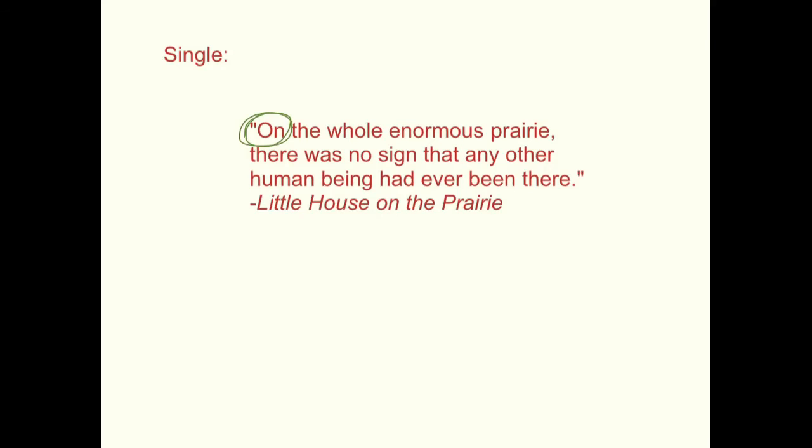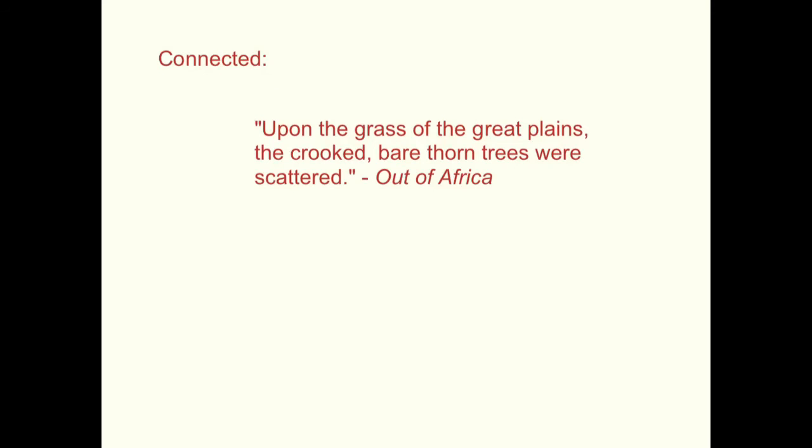So on is my preposition. It shows a relationship of location. Its object is the whole enormous prairie. So this all together, on is referring, what is it on? It's on the whole enormous prairie. That is the prepositional phrase with the preposition and the object. Specifically, the object of the preposition, of course.